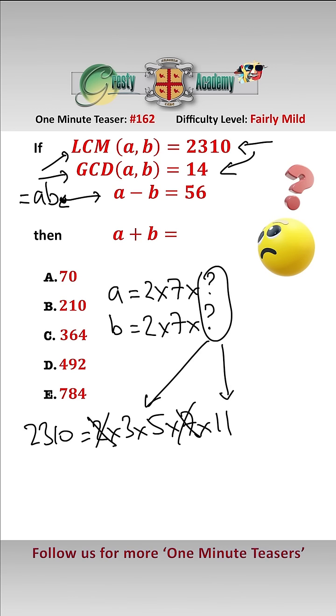Now we know that A minus B is 56. Now as A and B are both multiples of 14, we know that 56 must be a multiple of 14, which indeed it is. It's 14 times 4.